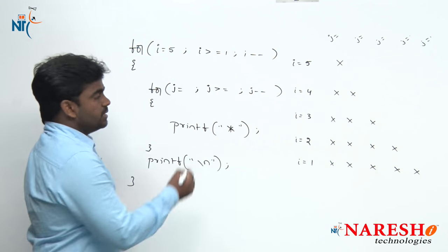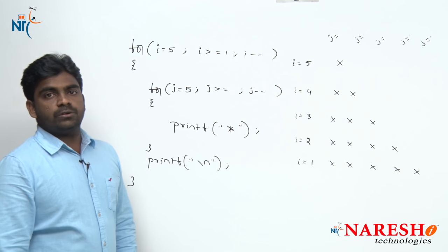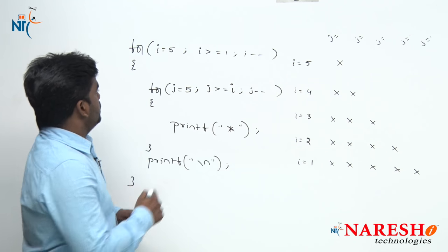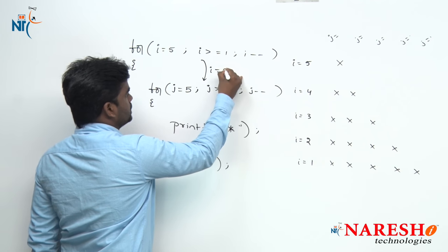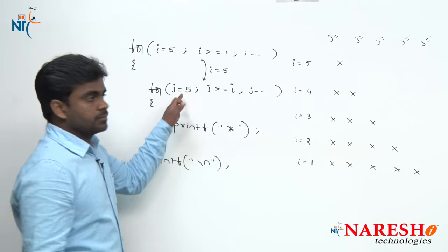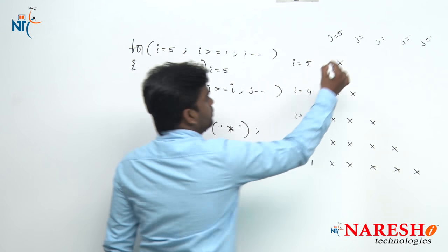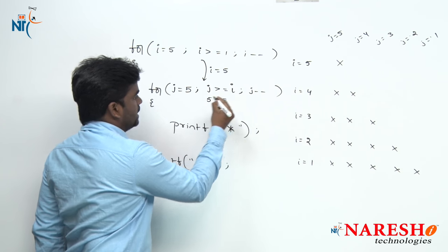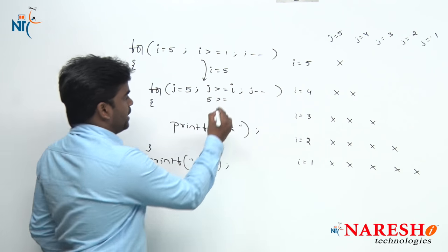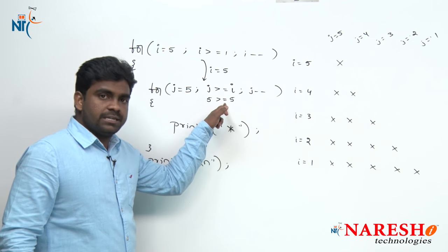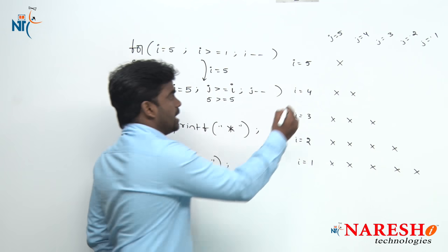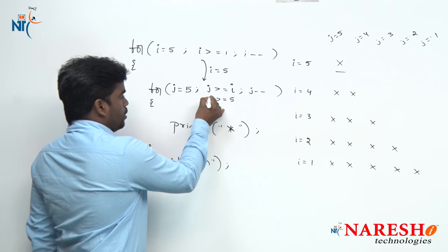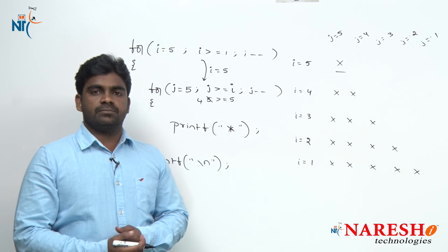Here j value starts with 5, and j is up to i. Observe: first when i equals to 5, the control moves inside. j value also starts with 5. 5 is greater than or equals to 5 — condition true, it will print this star. Next, whenever j value decreases, j value becomes 4. 4 is greater than or equals to 5 — condition has failed, then it will terminate the inner loop.